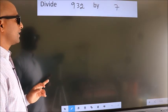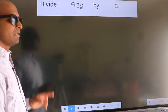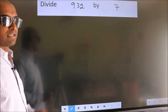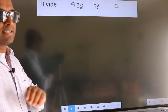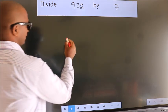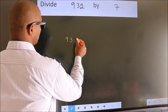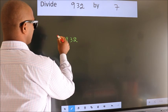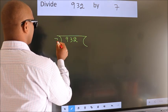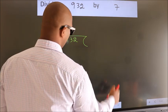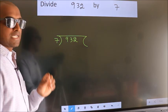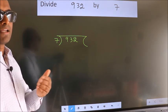Divide 9.32 by 7. To do this division, we should frame it in this way. 9.32 here, 7 here. This is your step 1. Next.